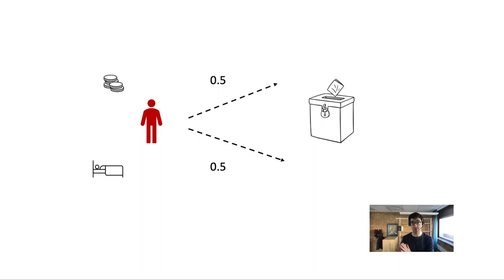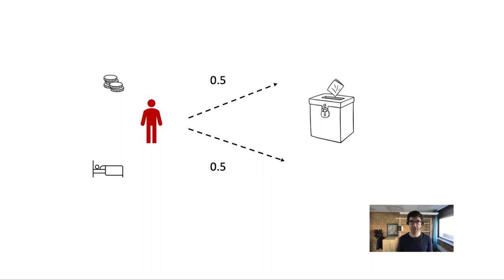Now let's apply Franklin's own theory — minimal event causal libertarianism — to this case. Franklin thinks the agent is free if he is normatively competent, such that he can appreciate reasons and has the ability to make choices based on these reasons. Moreover, if indeterminism is true, he has the opportunity to make more than one possible choice. For Franklin, this is a case where the thief has free will if all these conditions are met.